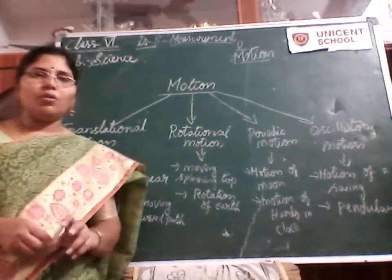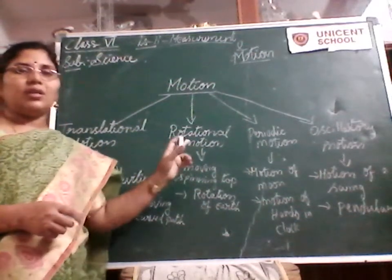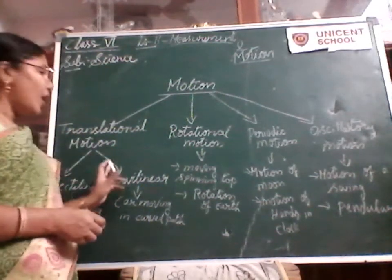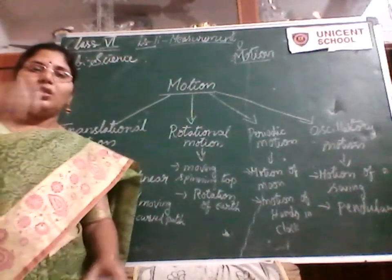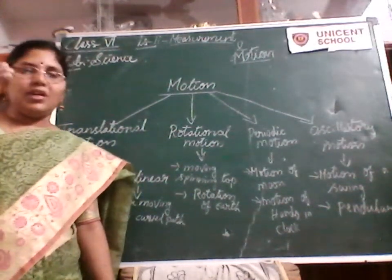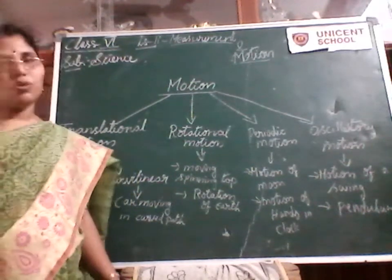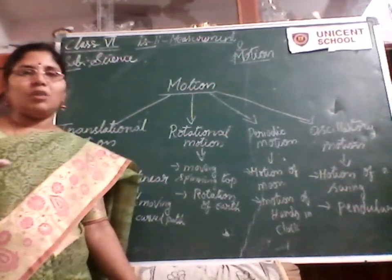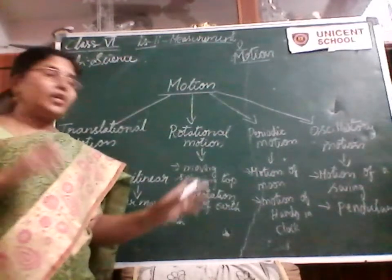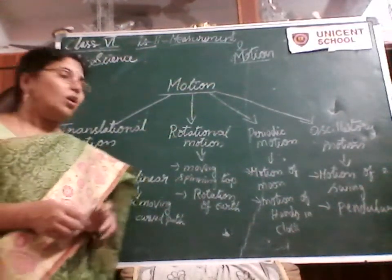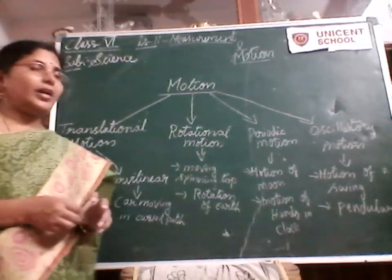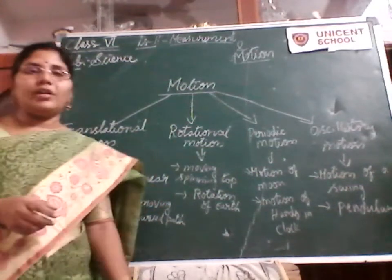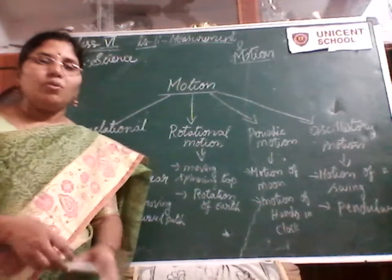A car also exhibits multiple motions. A car moving on a straight path shows rectilinear motion; when a curve comes, it shows curvilinear motion; and the wheels of the car show rotational motion. So three kinds of motion are exhibited by a car when it moves on a road. There are many other objects which exhibit more than two or three kinds of motions.